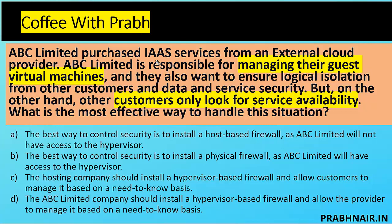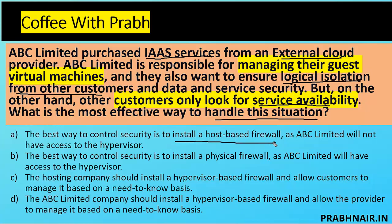Next coffee shot: ABC Limited purchases IaaS services — renting CPU, RAM, and storage virtually from an external cloud provider like Amazon or Microsoft. ABC Limited is responsible for managing their guest virtual machines, including OS and network configuration. They want to ensure logical isolation from other customers' data and services. Another customer only cares about availability. What is the most effective way to handle this? Option A: install a host-based firewall — correct, because in IaaS you don't have access to the hypervisor, which is managed by the cloud provider.